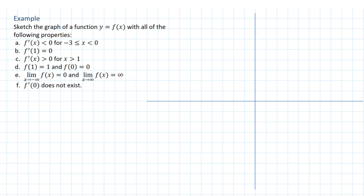All right, so in this example, we have some properties here, a through f, that we're going to consider to sketch the graph of a function.